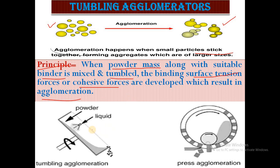This is the diagram of tumbling agglomeration. The first diagram shows tumbling agglomeration and the second shows press agglomeration. Press agglomeration is the pellet mill technique covered in the last video, which depends on compaction. In tumbling agglomeration, no pressure is applied, making it a non-compaction technique — this is the key difference between the two.